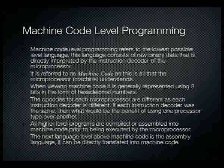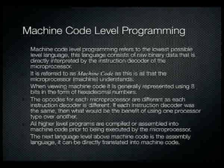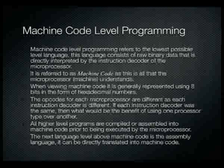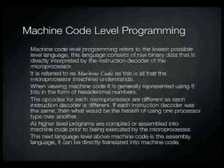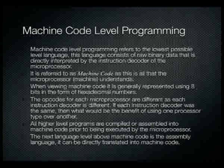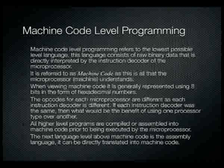Machine code is the lowest possible level language inside a computer. It is raw binary data that sits inside the memory and is directly interpreted by the instruction decoder of the microprocessor. You can't get any lower than machine code level. Because it's difficult to look at in binary format, we group them in 8-bit chunks and view them in hexadecimal format — two hex digits per 8-bit memory location.